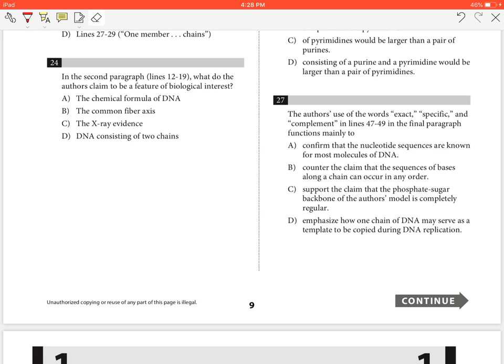A. Confirm that the nucleotide sequences are known for most molecules of DNA. B. Counter the claim that the sequences of bases along a chain can occur in any order. C. Support the claim that the phosphate sugar backbone of the author's model is completely regular. And D. Emphasize how one chain of DNA may serve as a template to be copied during DNA replication.